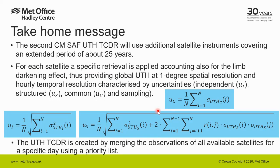To sum up, the new CMSAF TCDR will provide global UTH at 1-degree spatial resolution and 1-hour temporal resolution, characterized by uncertainties classified as independent, structured, and common per grid box. The new TCDR will be created by merging the observations of all the available satellites for a specific day. Thank you.